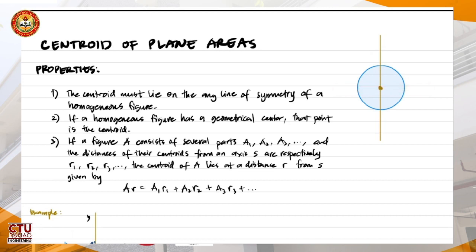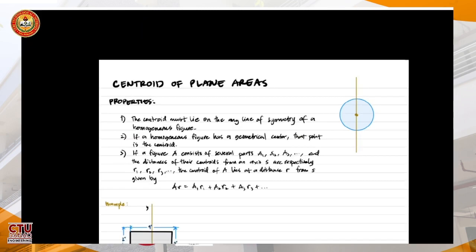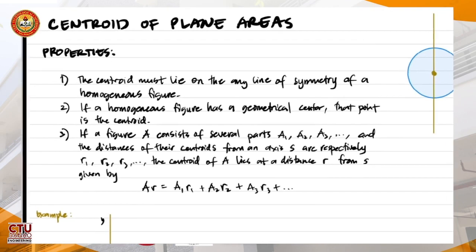Same way with a triangle — if we have an isosceles triangle where this side equals that side, and this is the axis of symmetry, then the centroid lies within that axis of symmetry. That's what property number one means.